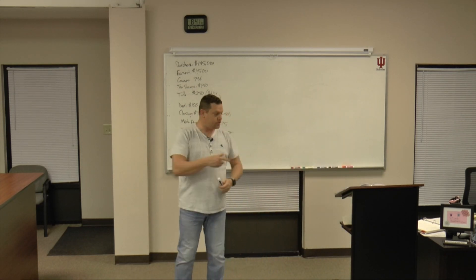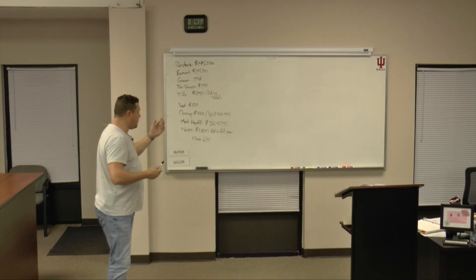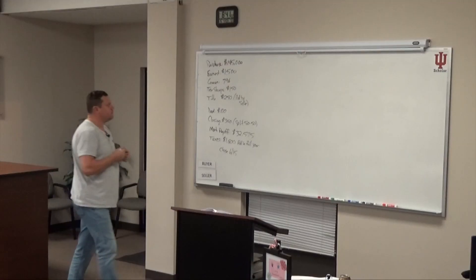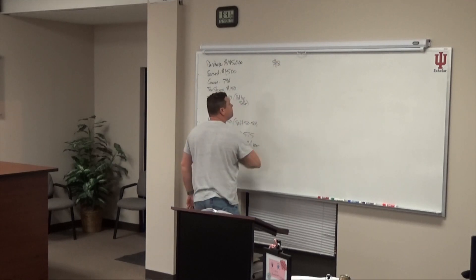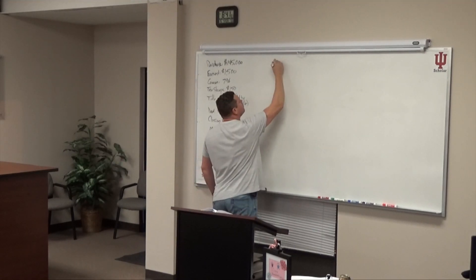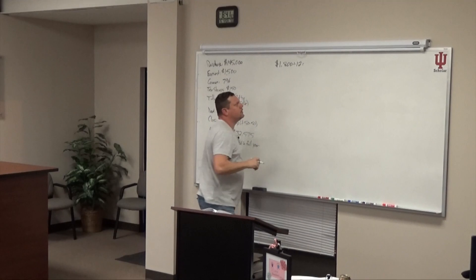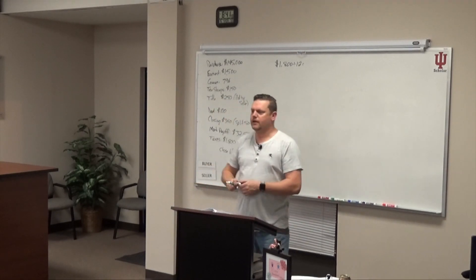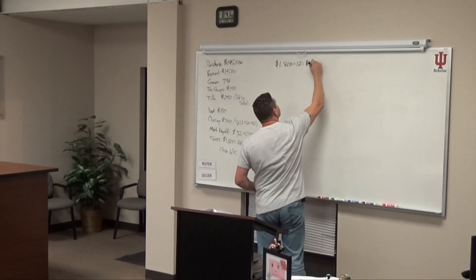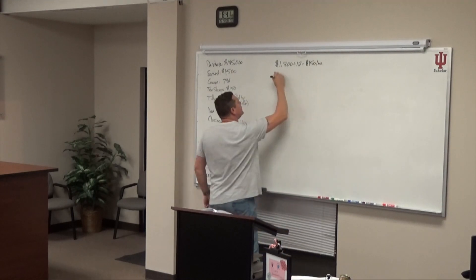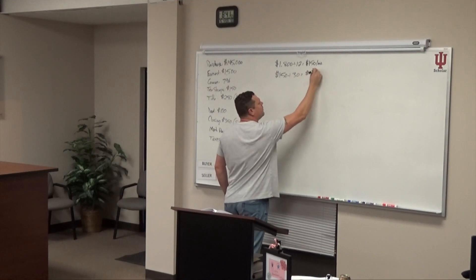The first thing we're asked to do on the next page is to prorate the taxes. We have the $1,800 and we're going to divide that by twelve. When I do that I come up with $150 per month. I take $150 divided by thirty and come up with $5 per day.